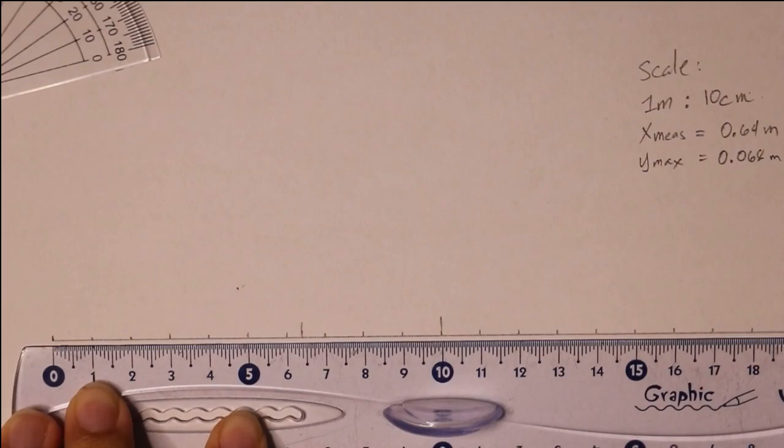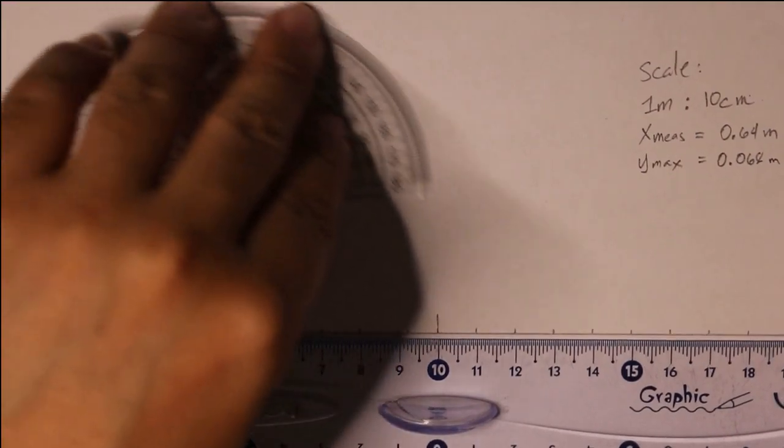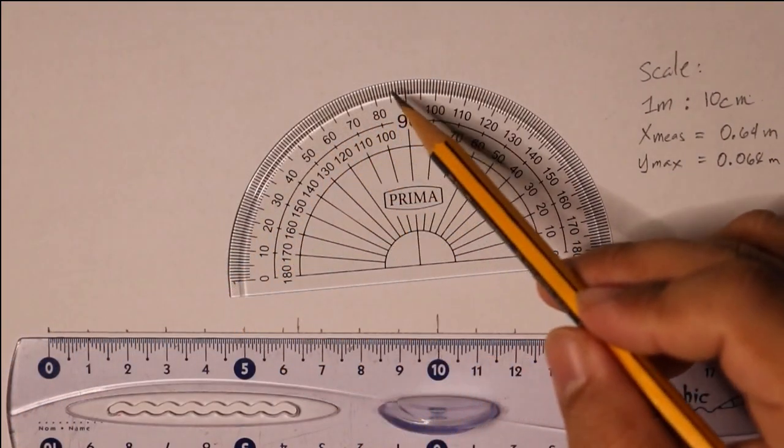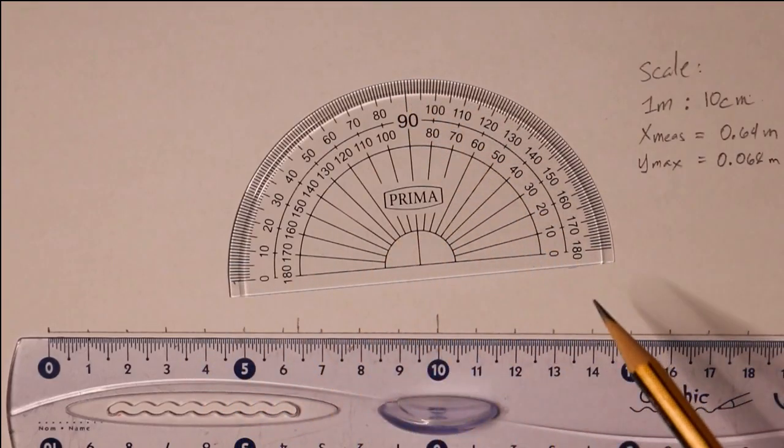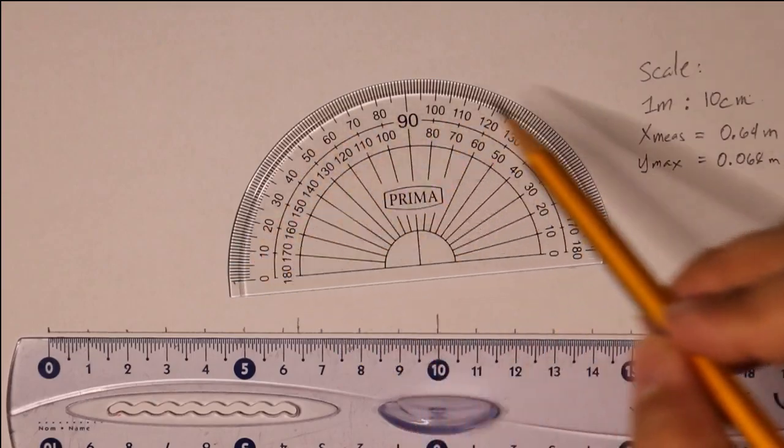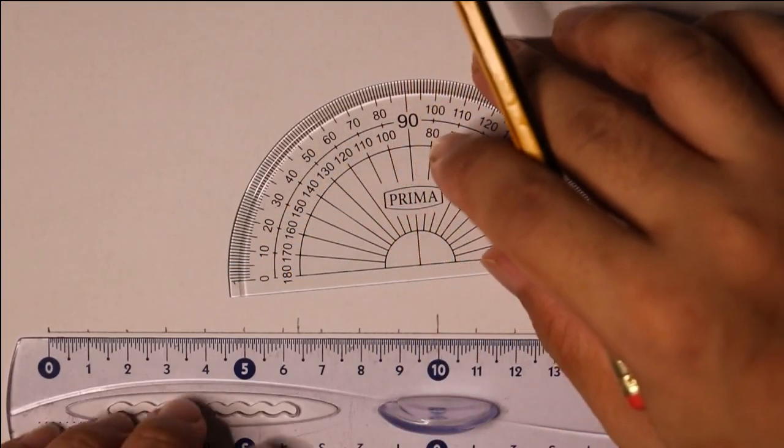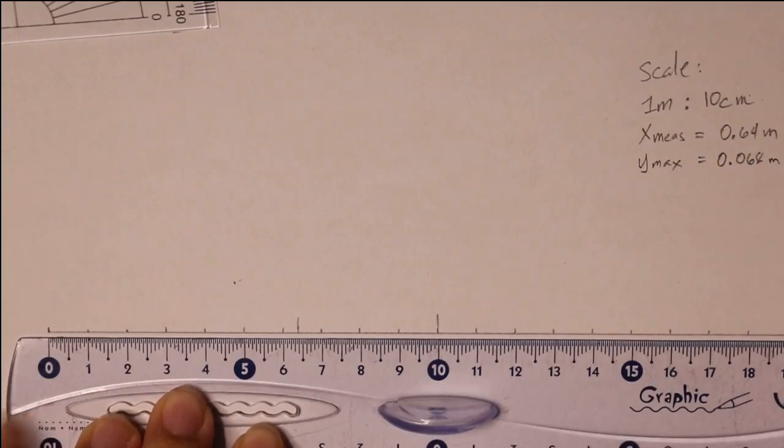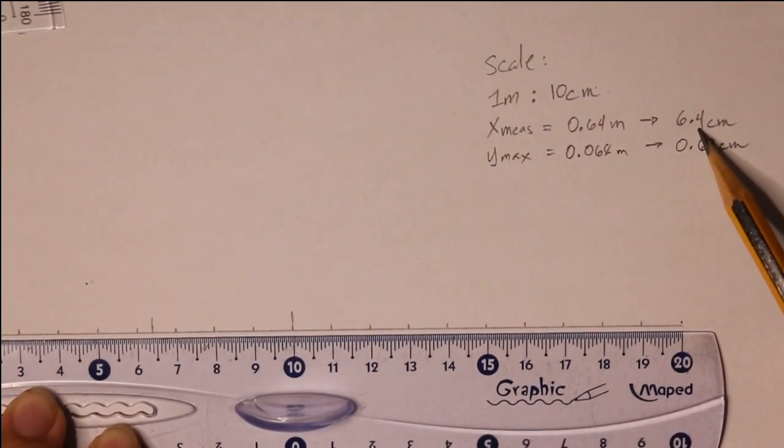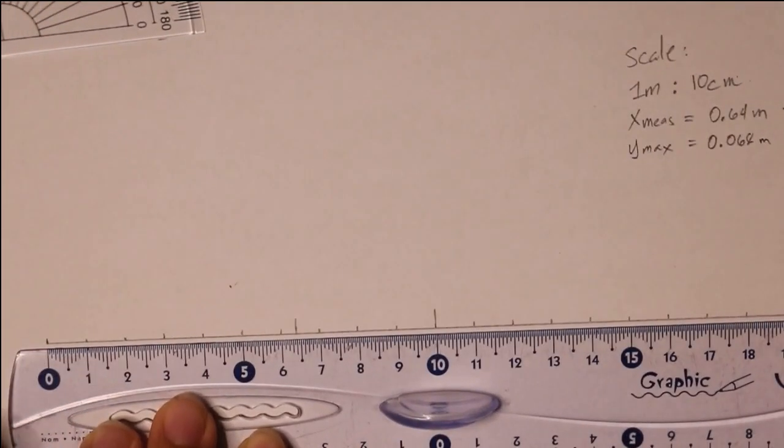Next, the Y maximum is at 0.68 centimeters. Where do we put the Y maximum? Usually the maximum height of a projectile occurs at the center or at the halfway of the trajectory. If the range is 6.4 centimeters, that means the maximum height will be at half of 6.4, that will be 3.2.